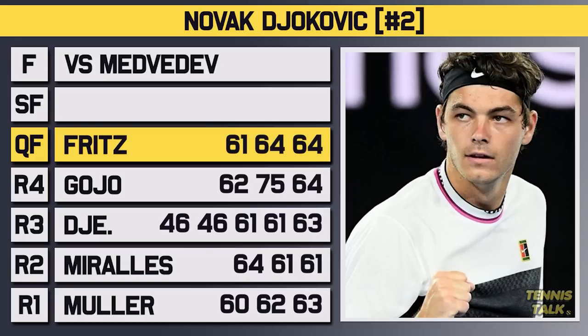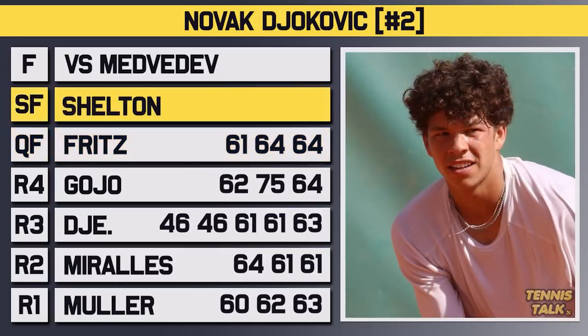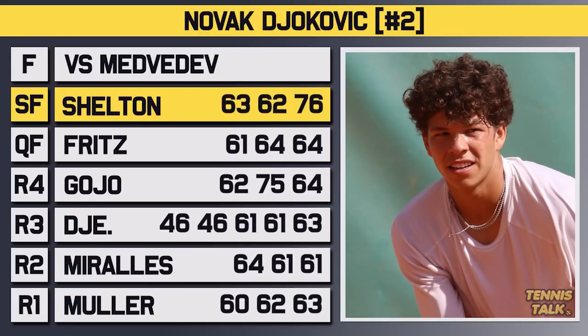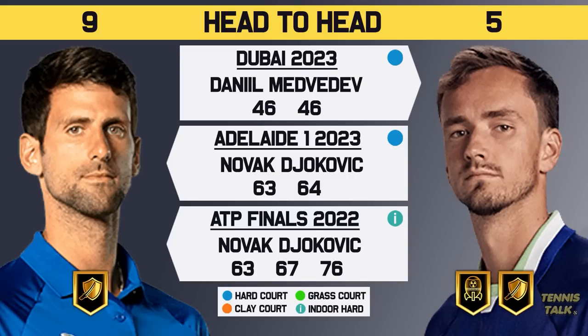In the semifinals Djokovic would take on the unseeded Shelton and after winning the first two sets, Djokovic would fight in the third to win 6-3, 6-2, 7-6 to advance to another US Open final.